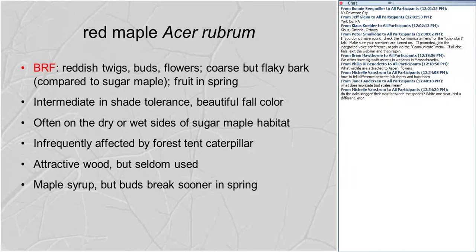Best recognizable features for red maple: reddish twigs, reddish buds, reddish flowers, coarse but flaky bark, and fruits that mature in spring. It's intermediate in shade tolerance with a bimodal ecological distribution — fairly competitive on both dry and wet sites, whereas sugar maple is more competitive on intermediate mesic sites. Red maple is seldom used for lumber because the trees tend to decay on the inside, making it hard to get good yield. You can make maple syrup from red maple, but the buds break sooner in spring, changing the sap flavor.